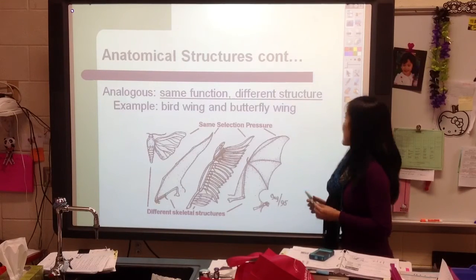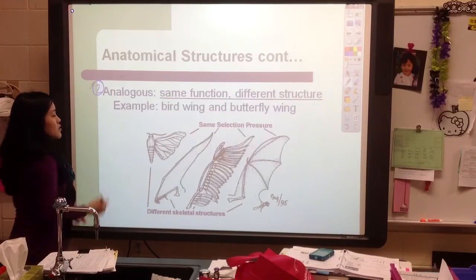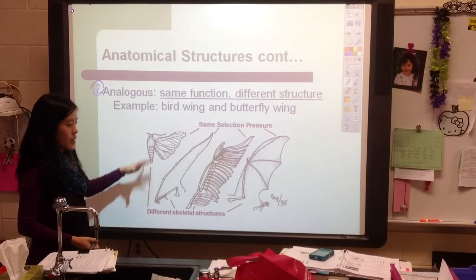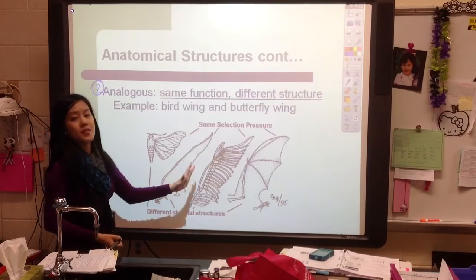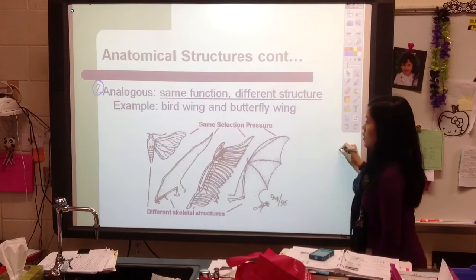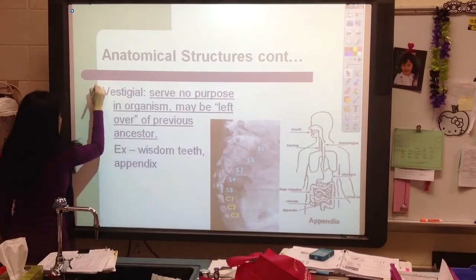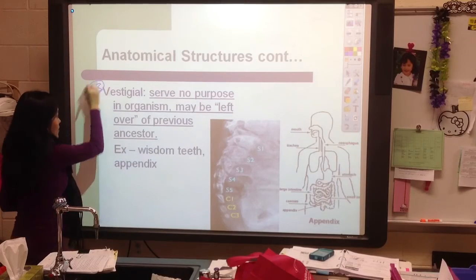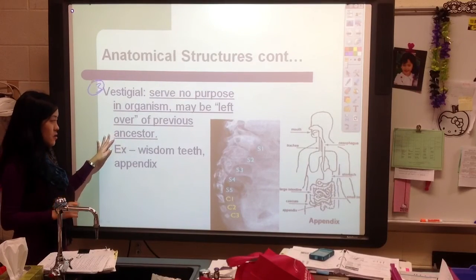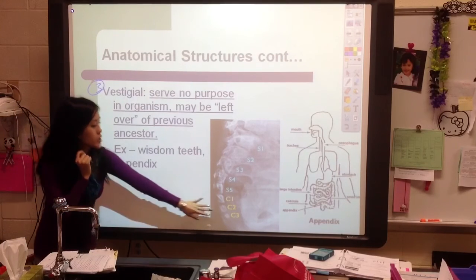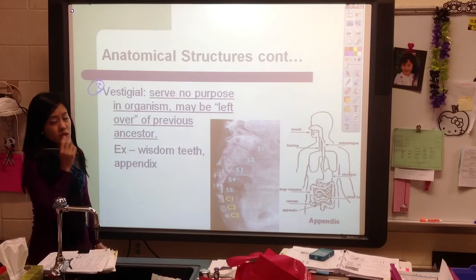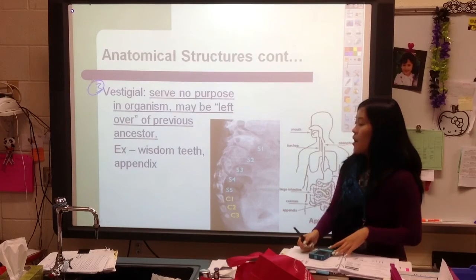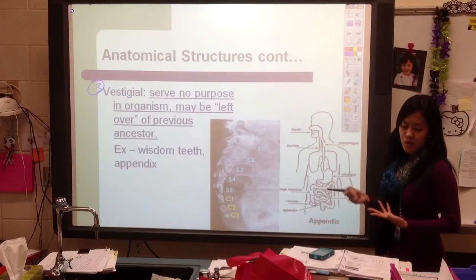The second type is analogous structures, which means the same function but structured or made differently. All of these things help the organism fly, but they're built in different ways from different materials. The last are vestigial structures, which serve no purpose in your body except that they were left behind by a previous ancestor — things like our wisdom teeth and our tailbone. We don't use them anymore, and wisdom teeth actually cause problems, but they used to serve a purpose for our ancestors.